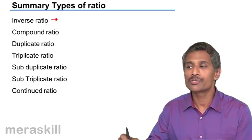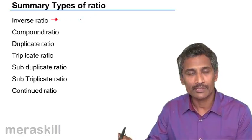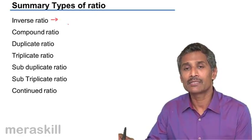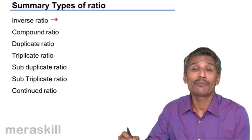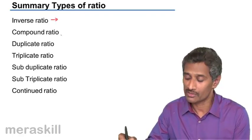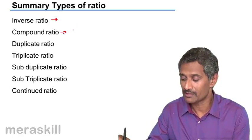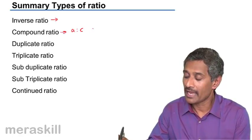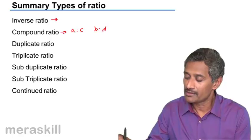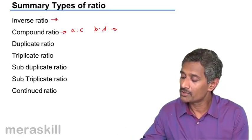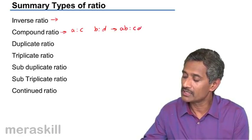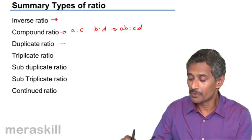Compound ratio: when you have two or more ratios, multiply all the antecedents, multiply all the consequents, and take the ratio of the corresponding antecedent to the corresponding consequent to get the compound ratio. So if a is to c and b is to d, the compounded ratio is ab is to cd.